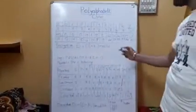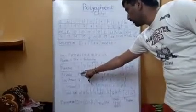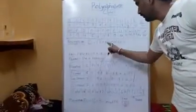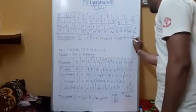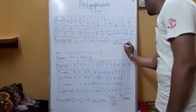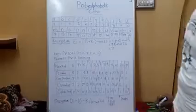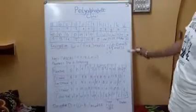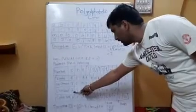After that, we apply our formula. For example, for S, the plain text value PI is 18 and the key value KI is 15. So 18 plus 15 mod 26 equals 33 mod 26, which is 7. In our table, 7 represents the alphabet H. So we write the value 7.